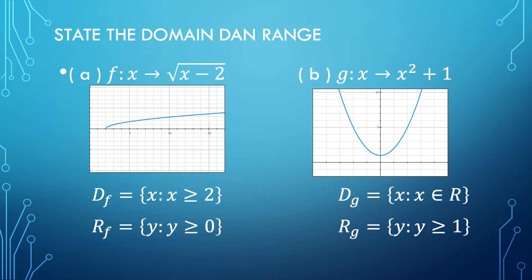Before going to find the Composite Function, we have to state the domain and range of function f and function g. Then we have to determine the existence of the Composite Function.